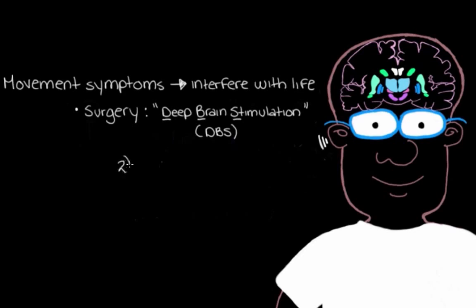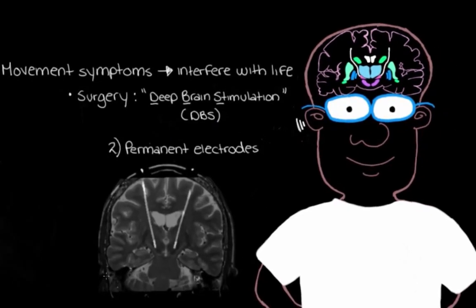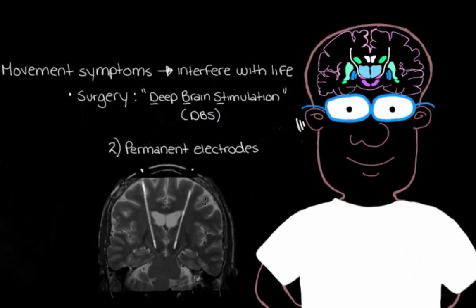So we pull them out, and in goes some permanent electrodes to those areas. So let's draw that here on our guy, and we can also see what that looks like on an MRI. So here's an MRI, kind of the same sort of view that we're looking at. And you can see those electrodes here on both sides of the brain.